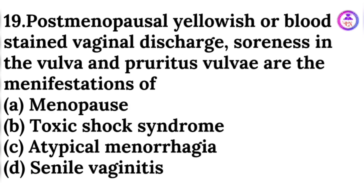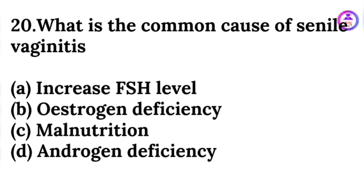Post-menopausal yellowish or blood-stained vaginal discharge, soreness in the vulva, and pruritus vulva are manifestations of senile vaginitis. The common cause of senile vaginitis is estrogen deficiency.